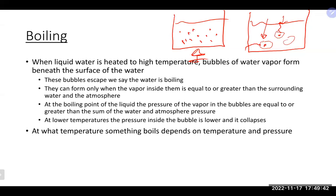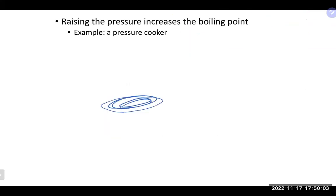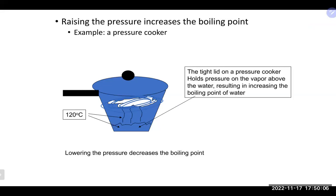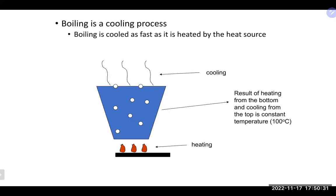What temperature something boils at depends on both temperature and pressure. If pressure is greater or less than atmospheric pressure, things can boil at a higher or lower temperature. In a pressure cooker, the tight lid traps vapor pressure above the water, raising the boiling point slightly and allowing food to cook faster.